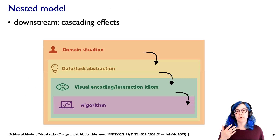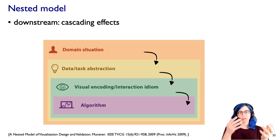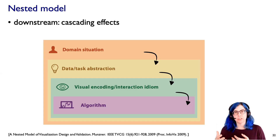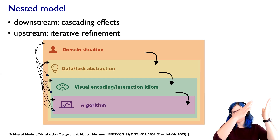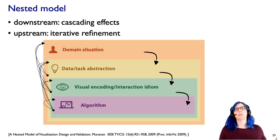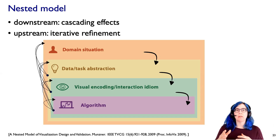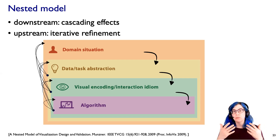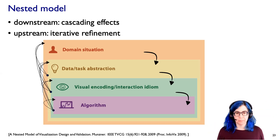The reason we think about these four levels separately in the nested model is, for one thing, I want to emphasize the cascading effects downstream. What you think about the domain user affects your abstraction, affects your idiom choice, and then your algorithm is trying to instantiate that. I also want to emphasize that it's very uncommon that you simply blast through and do this once and you're done. The common case is that you're iteratively refining. As you try out some of these ideas, maybe even after you implement them, you go back up and change your understanding of what the user needs or what an appropriate abstraction is, and maybe you change the idiom. So there are cascading downward effects, but it's also very common to iterate back upward.